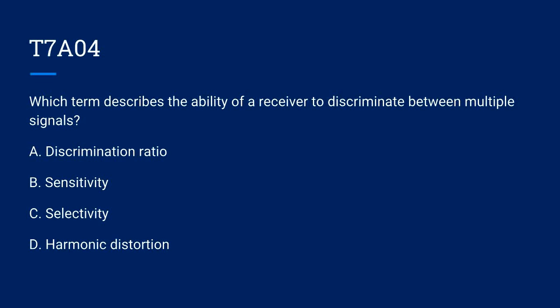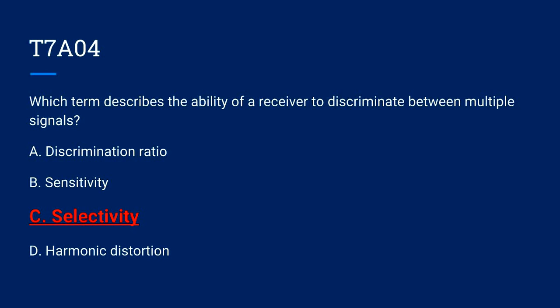T7A04. Which term describes the ability of a receiver to discriminate between multiple signals? A. Discrimination Ratio. B. Sensitivity. C. Selectivity. Or D. Harmonic Distortion. The correct answer is C. Selectivity.